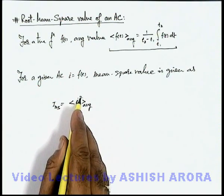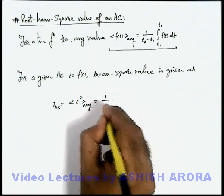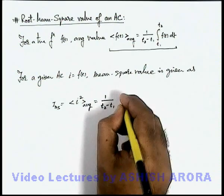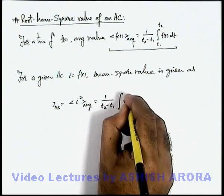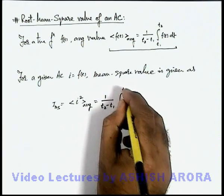That is, if we square the given function and find out its average, this will be given by 1 by t2 minus t1, integration of i square dt, from t1 to t2.